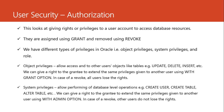Object privileges allow access and use of objects belonging to other users. For example, we created a user called Abraham. Abraham doesn't have any object for now — he doesn't have any table he can access — but we can give Abraham a right to access objects belonging to another user, maybe HR. HR has some tables. Abraham doesn't have tables, but we can give Abraham a right to access and use objects belonging to HR. Whenever we allow users to access objects belonging to other users, we are extending what we call object privileges.